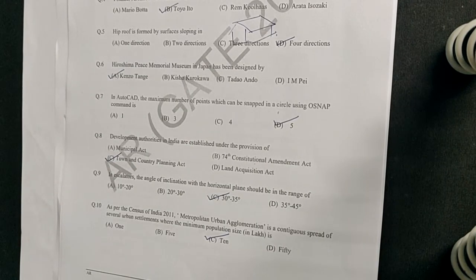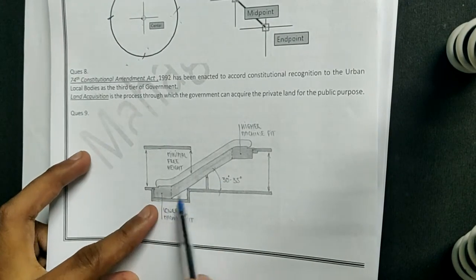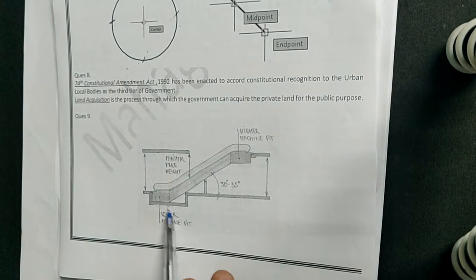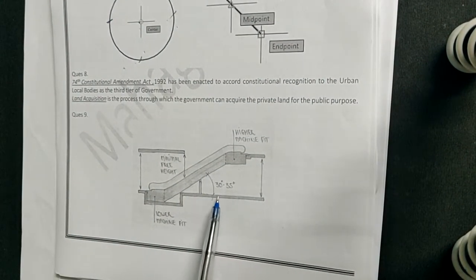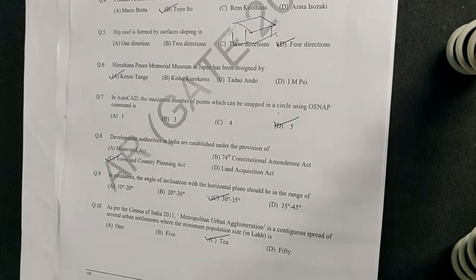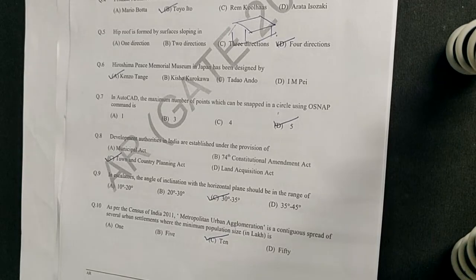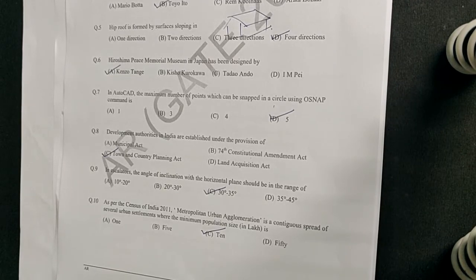The next question: in escalators, the angle of inclination with the horizontal plane should be in what range? I have a diagram showing a typical elevation section of an escalator, and you can see the angle formed is varying from 30 to 35 degrees.